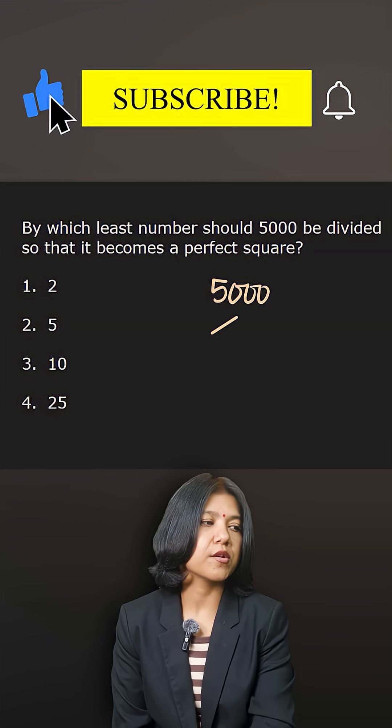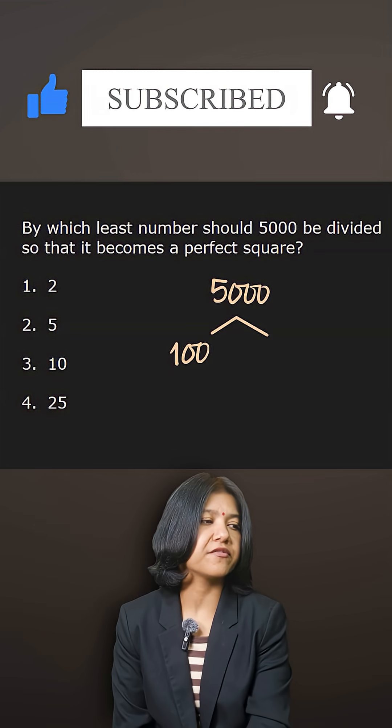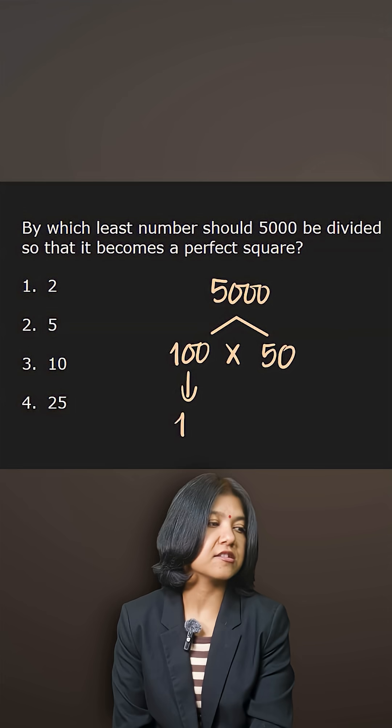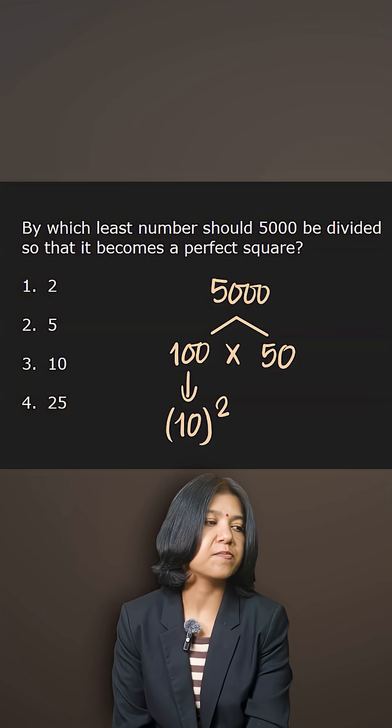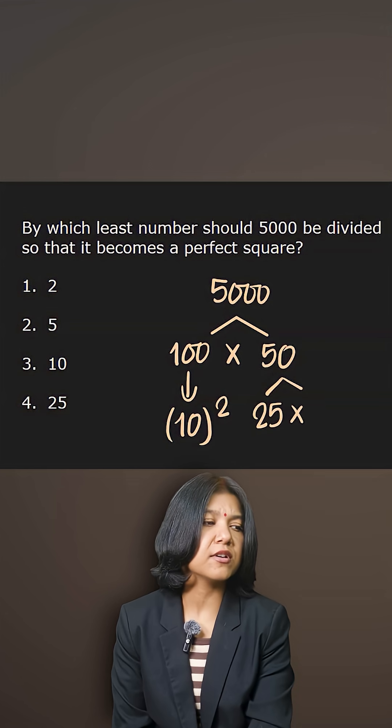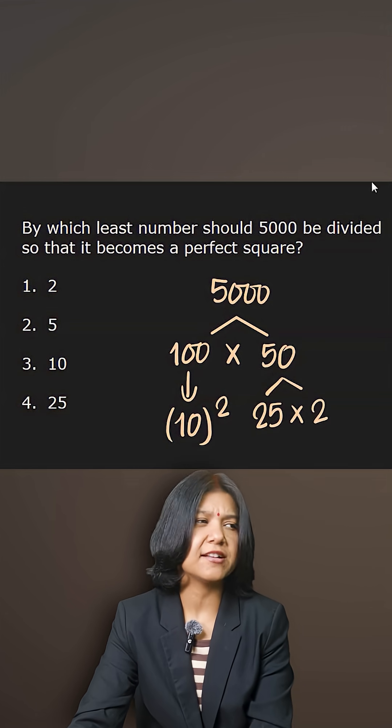Now 100 is a square of 10, so the next number I have is 50. I can split that again: 25 times 2. 25 is a square number, so splitting with a square number will actually help you do it very quickly. 25 being the square of 5.